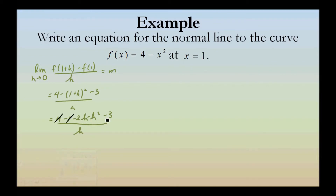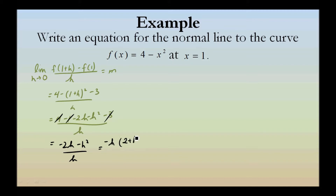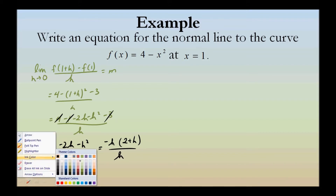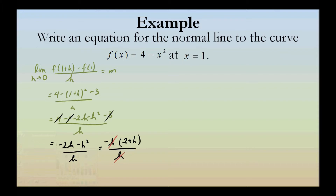We'll get rid of the canceling terms, and we get negative 2h minus h squared divided by h. We can factor out an h here to get negative h times the quantity 2 plus h divided by h, and we can cancel the h.